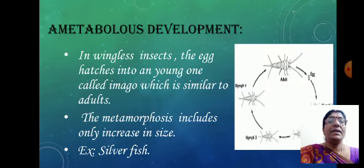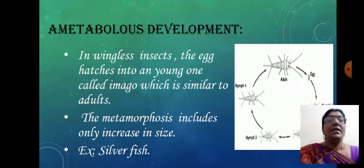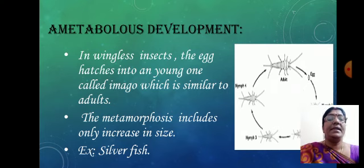In ametabolous development, it is normally found in wingless insects such as the silverfish. The egg hatches into the young one, called an imago, which is exactly similar to the adult. The metamorphosis includes only an increase in size.